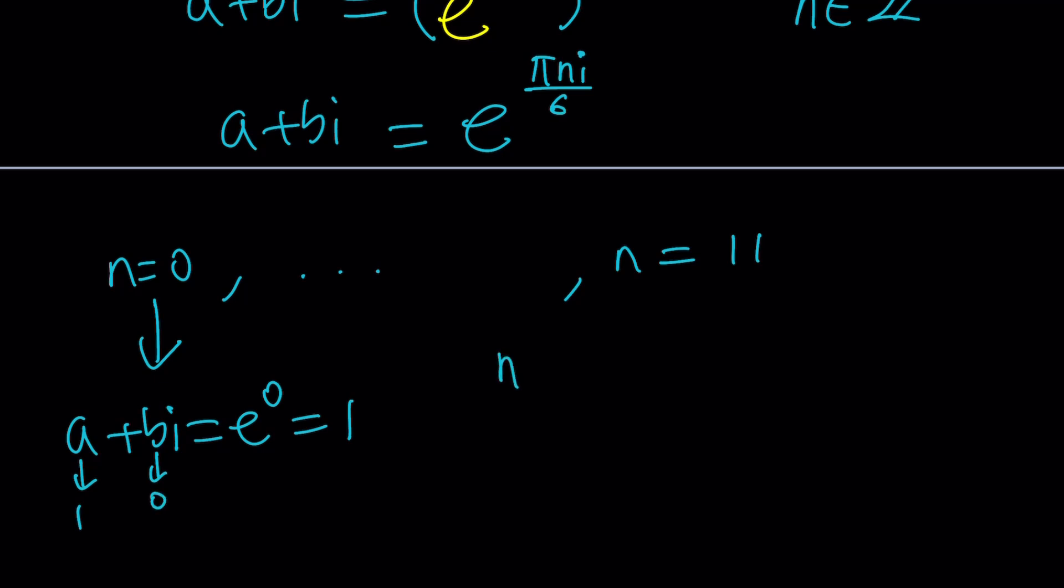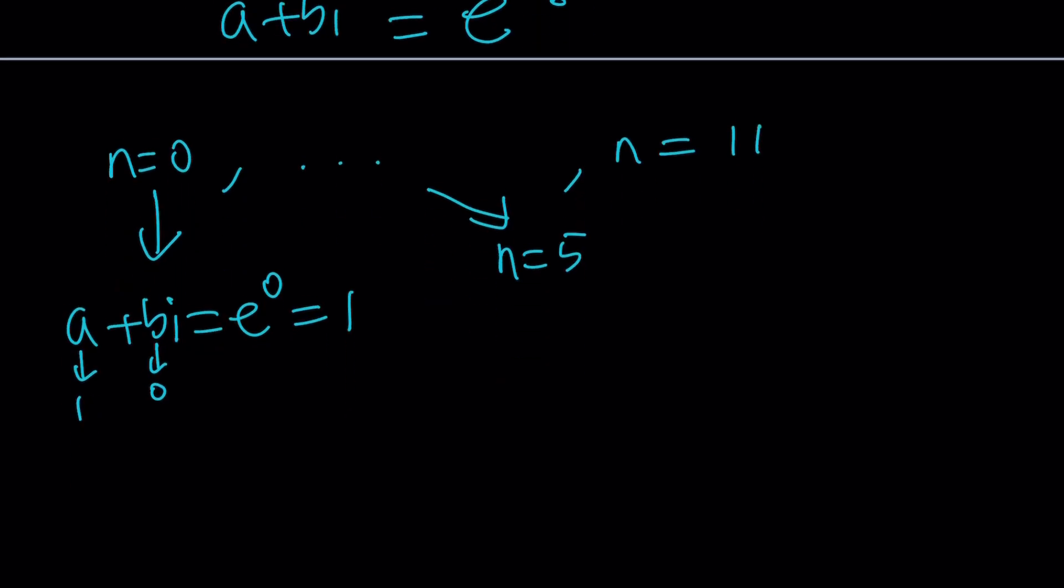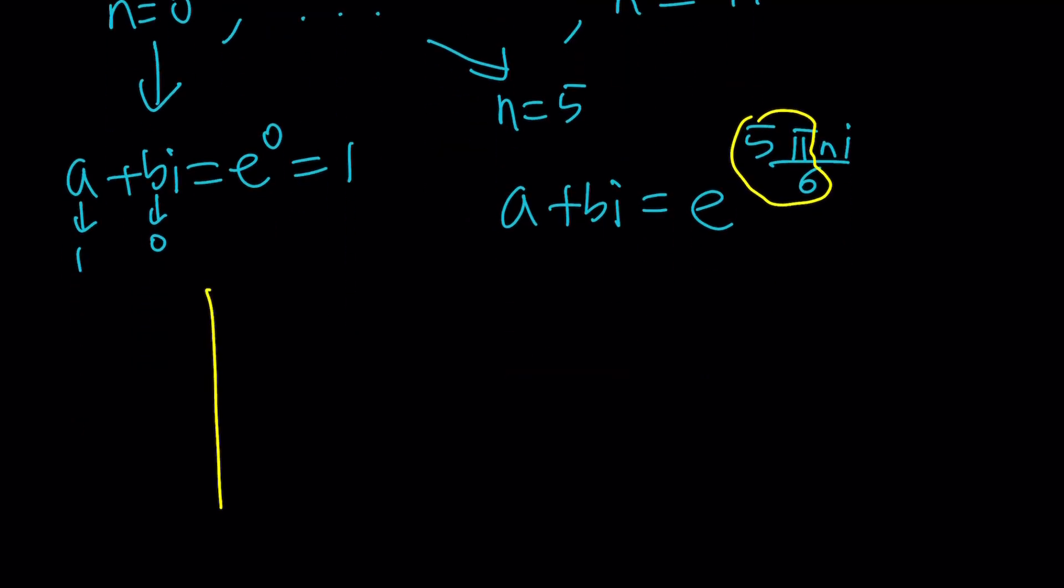What about something else, like n equals five? Let's just pick a random one. And then you're going to be getting a plus bi equals e to the power five pi n i over six. So you have to consider five pi over six, which is actually 150 degrees. And if you just think about it, 150 degrees is something like this, and its cosine and sine value is actually going to be reflections of the 30 degrees, if you think about the unit circle, because the modulus is one here. And you're going to be noticing that the sine value is the same.